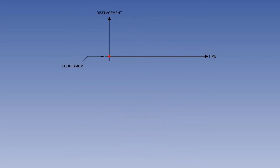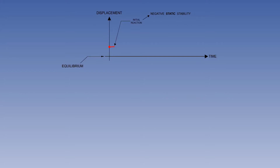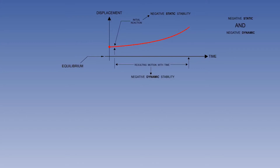Now we will consider another type of dynamic stability called divergence. The red dot is displaced from equilibrium, and when the disturbing force is removed, the initial reaction is to start to move further away from equilibrium. This illustrates negative static stability. Over a period of time, the dot continues to move away from equilibrium, illustrating negative dynamic stability.